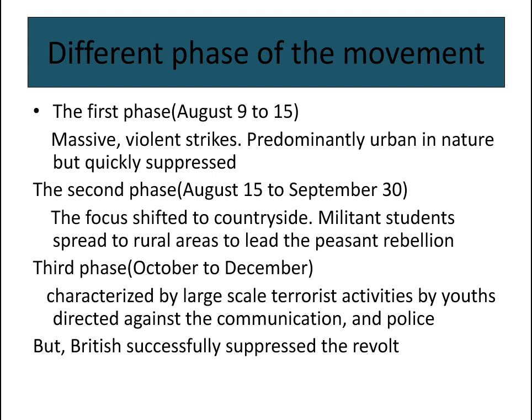The different phases of the movement: The first phase, between August 9 to 15, saw massive violent strikes, predominantly urban in nature, but it was quickly suppressed. The second phase, between August 15 to September 30, saw the focus shift from urban areas to the countryside, as militant students spread to rural areas to lead the peasant rebellion.